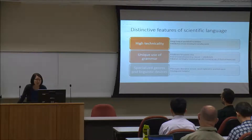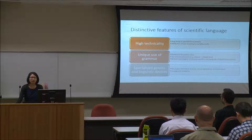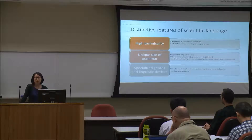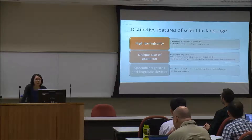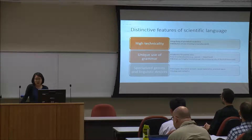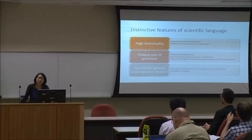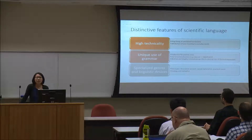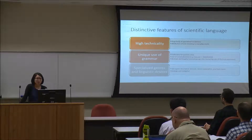With respect to science, the distinctive features of scientific language include its high technicality, which is represented by its huge body of specialized vocabulary, and also the attribution of new meanings to everyday words like 'force'. There is also a unique use of grammar, for example, by its preference for passive voice and its preference for nominalizations, where process verbs like 'expand' and 'contract' are converted into nouns like 'expansions' and 'contractions'.